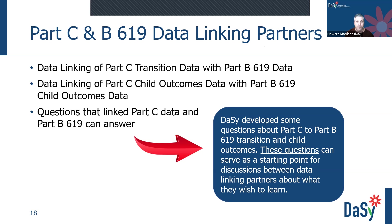This section talks about a number of potential data linking partnerships and includes a visual depicting different potential partners. Some may include Early Hearing Detection and Intervention (EHDI), Child Abuse Prevention and Treatment Act (CAPTA), early childhood integrated data systems, statewide longitudinal data systems, finance information, and personnel information. The linking Part C data with Part B 619 section describes data linking for Part C transition with Part B 619 data, linking child outcomes data, and questions that linked Part C and Part B 619 data can answer, with an accompanying blog.